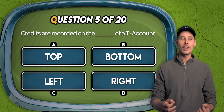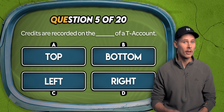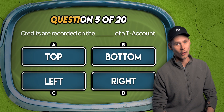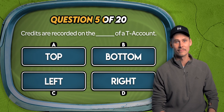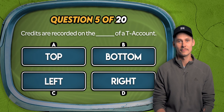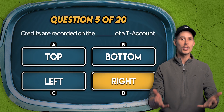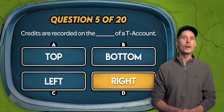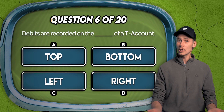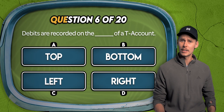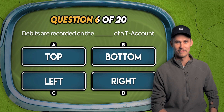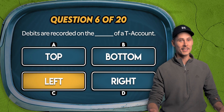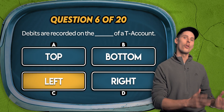Question 5. Credits are recorded on which side of a T-account? The top, the bottom, the left, or the right? The answer is D — credits always go on the right side of a T-account. Question 6. Debits are recorded on which side of a T-account? The top, the bottom, the left, or the right? It's C — debits go on the left and credits go on the right.